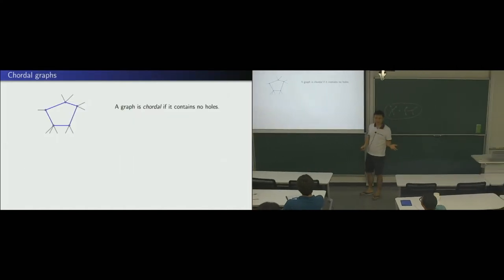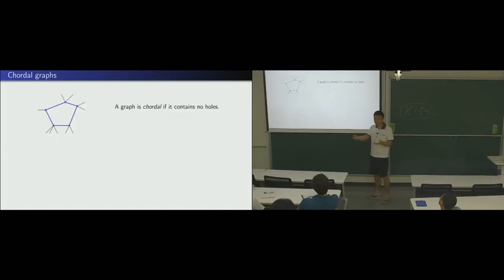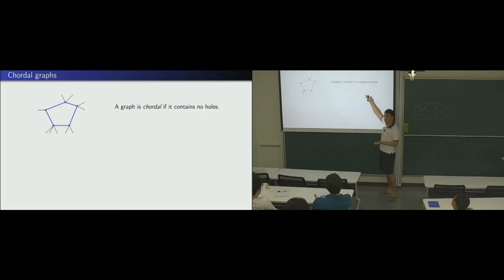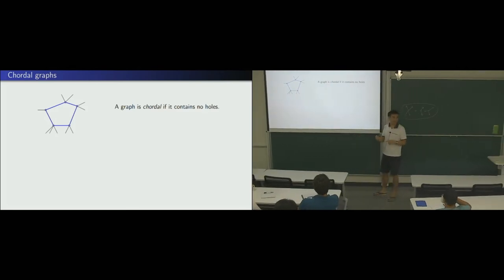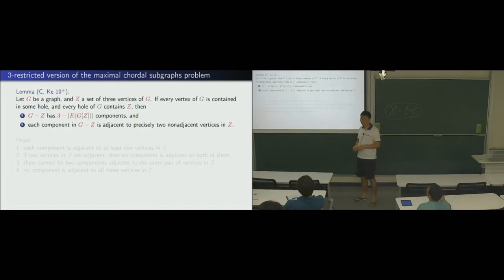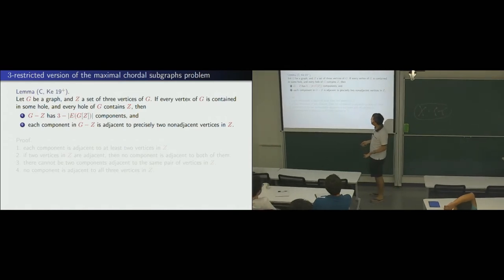This condition is very strong. And, let's see an example, chordal graphs. So, I hope everybody knows what's chordal graph. So, basically, no holes, cycles of, induced cycles of four or larger. So, the structure result is very simple. So, if you have, basically the, now we take the T to be 3. So, we have a set Z of three vertices. So, every hole of G contains those three vertices. Okay? So, we have this.